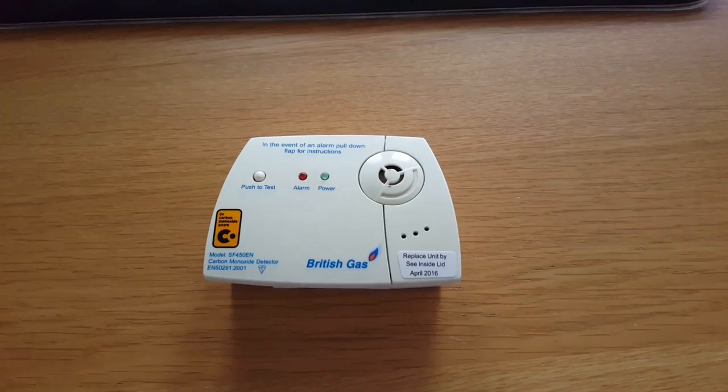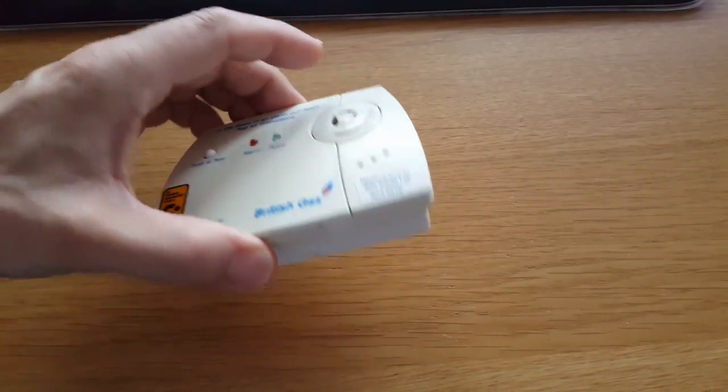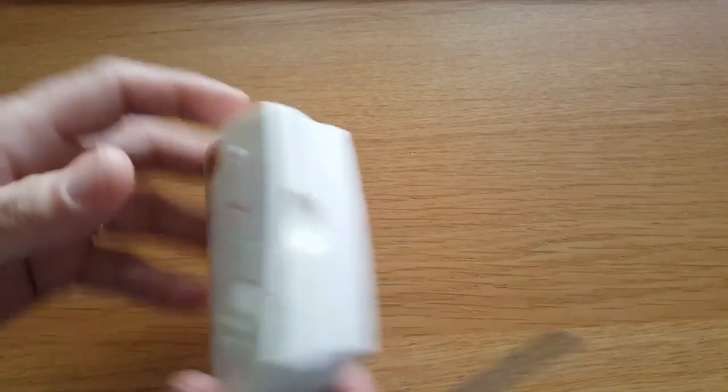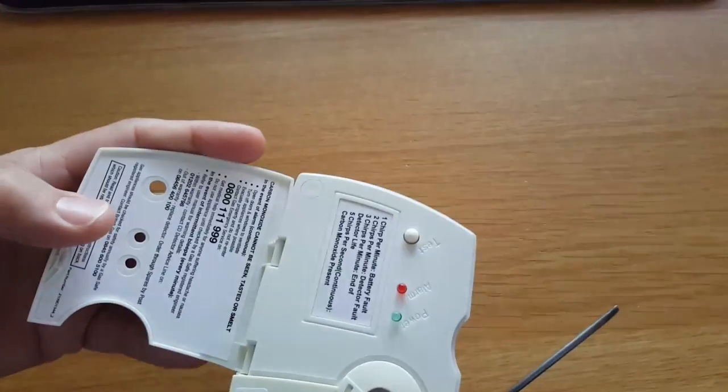The expiry date on the corner of the unit shows April 16 on this one. In the middle of the night, it started beeping. There was no obvious way to find out how to silence it, and there's no way to easily remove the batteries.